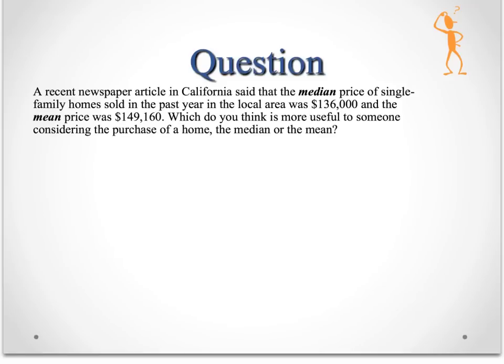So here's a question for you to think about. A recent newspaper article in California said that the median price of single family homes sold in the past year in the local area was $136,000, and the mean price was $149,160. Which do you think is more useful to someone considering the purchase of a home, the median or the mean?